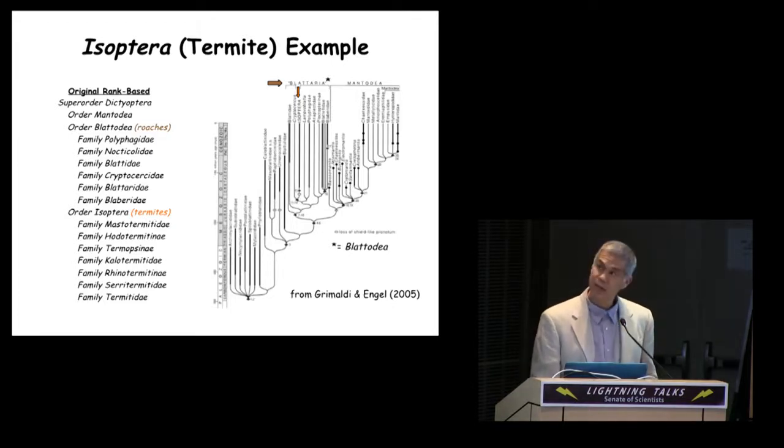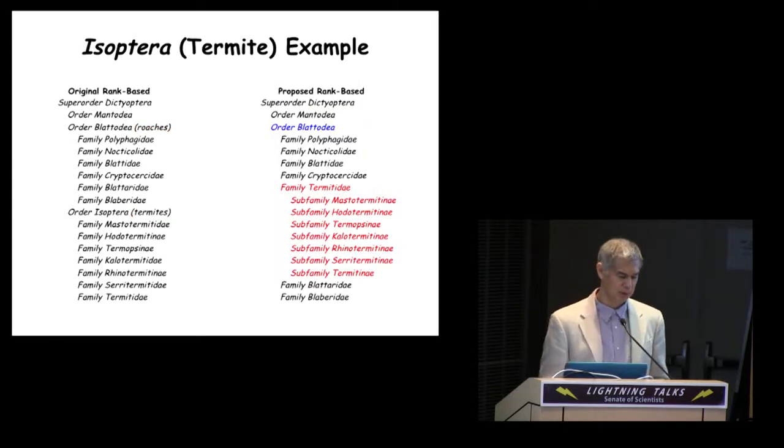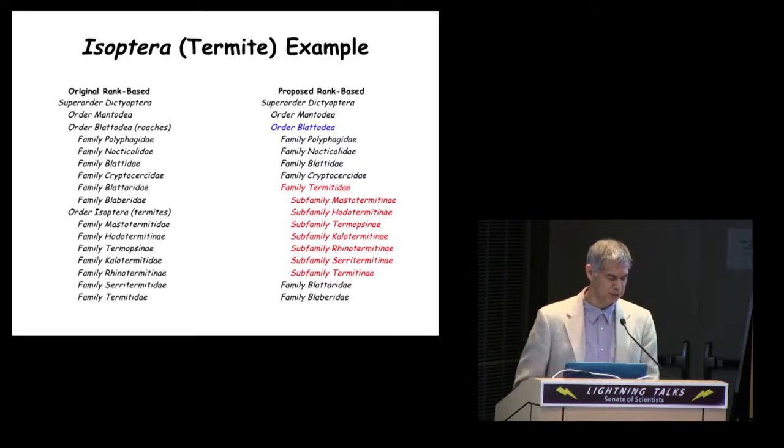However, more recent evidence, illustrated in the tree on the right, indicates that termites are nested within roaches. To reflect this new hypothesis of relationships under the rank-based system taxonomy on the right, termites have been demoted from a separate order to a family of roaches, which results in two types of changes.